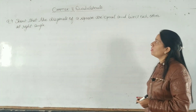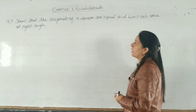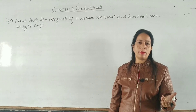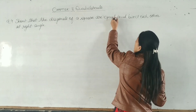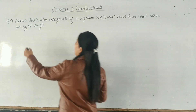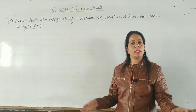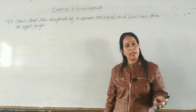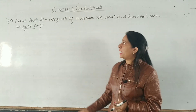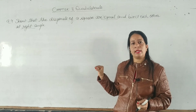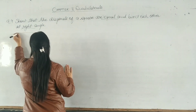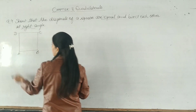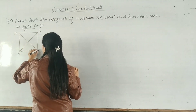Question 4: Show that the diagonals of a square are equal and bisect each other at right angles. You have to prove that the diagonals of a square are equal, and where they bisect each other, a right angle is formed — just as in a rhombus, the same holds for a square.